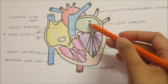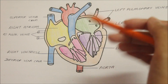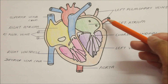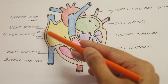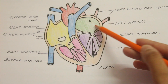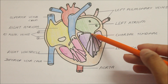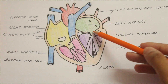It receives oxygenated blood from the lungs through four pulmonary veins — the two left pulmonary veins and the two right pulmonary veins — and pumps it to the left ventricle through the left atrioventricular, or bicuspid, or the mitral orifice.